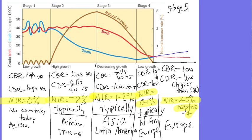Let's get started. The graph above is the demographic transition model. The blue line is the death rate, the red is the birth rate, and the brown is the natural increase rate. Countries go through each of these different stages. As we went through in class, you can see the crude birth rate, crude death rate, natural increase rate, and the different countries or regions of the world typically found in these stages. We'll come back and look at this again.